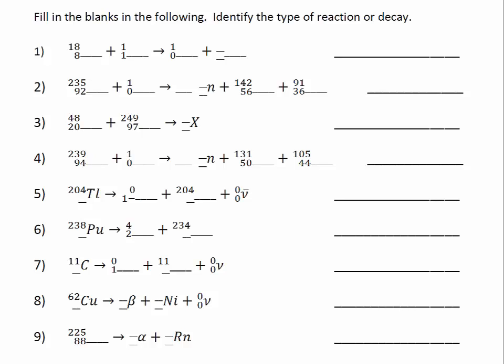This is a nuclear reactions problem-solving video. Looking at the first reaction here, we have some missing information and we're asked to identify the type of reaction or decay. We are given the atomic number 8 and mass number 18. Based off the atomic number, this element is oxygen.